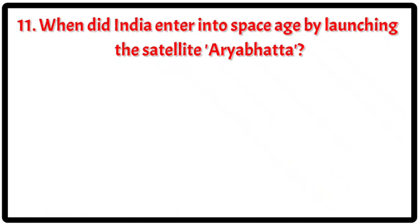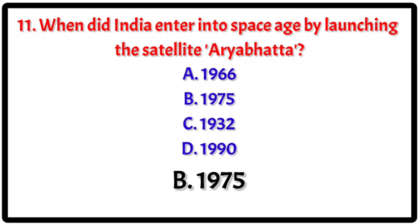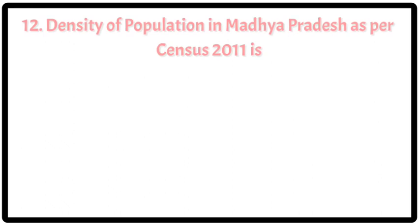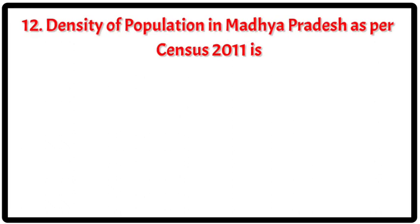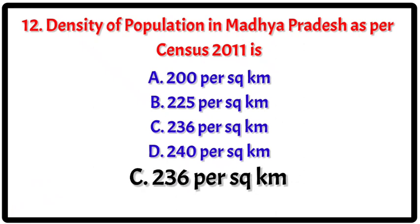Question 11: When did India enter the space age by launching the satellite Aryabhata? Your options. The correct answer is A. Question 12: The density of population in Madhya Pradesh as per census 2011 is? Your options. The correct answer is C — 236 per sq km.